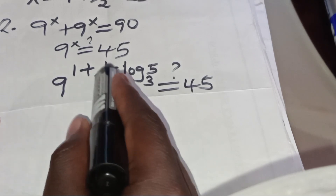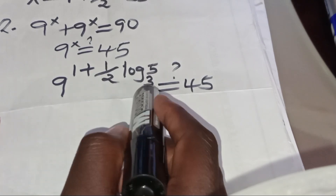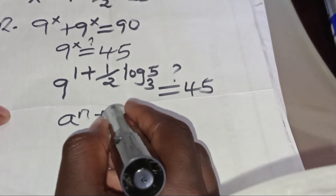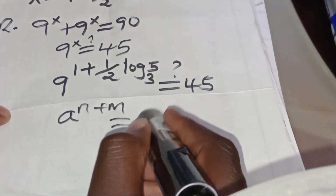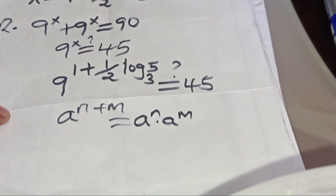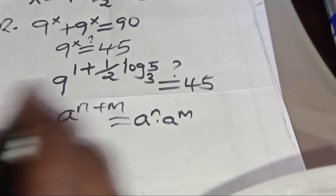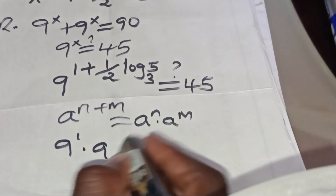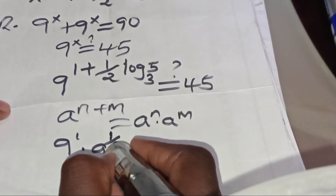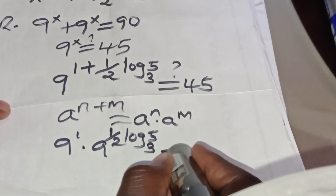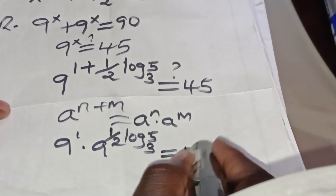We have 9 to the power of (1 plus one-half log₃5). This is in the form of a to the power of (n plus m), which we can express as a to the power of n multiplied by a to the power of m. Applying this indices identity, this is the same as 9 to the power of 1 multiplied by 9 to the power of one-half log₃5, and this should give us 45.